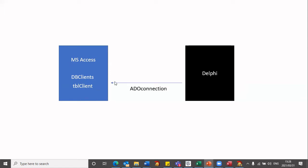One of the first things we need to do is to establish a connection between Delphi and the database program. We make use of the ADO connection component which allows Delphi to communicate with Microsoft Access. This then creates the connection to your database, which is dbClients. And once we've connected to the database, we can link the table we want using the ADO table component in Delphi. Using this table, we select the table that we're going to be using and that contains the data, which will be stored inside the ADO table component.